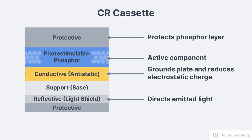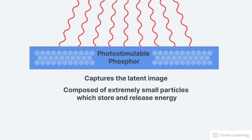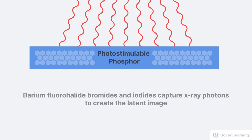The phosphor layer, or active layer, is the most important layer within the imaging plate. Like the film in traditional radiography, it is where the latent image will be produced. The phosphor layer is composed of extremely small particles that have the ability to both store and release energy. The most common phosphors are barium fluorohalide bromides and iodides with europium activators. It is these two components — the europium activated barium fluorohalide bromides and iodides — that will work together to capture the X-ray energy photons and create the latent radiographic image.